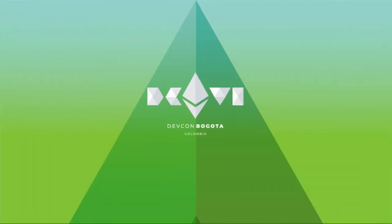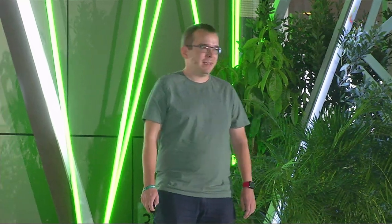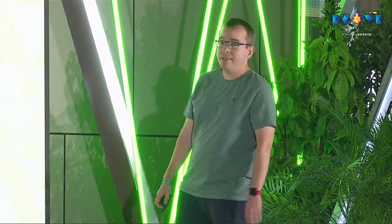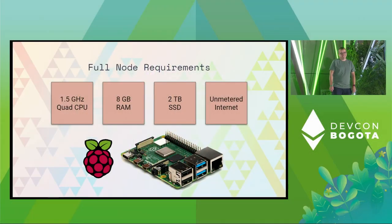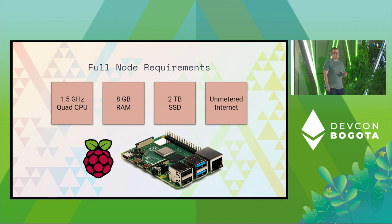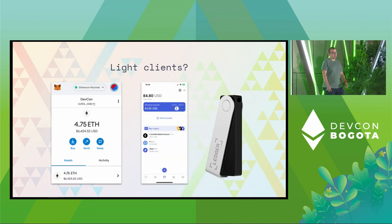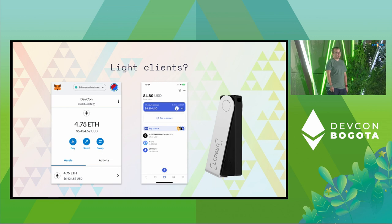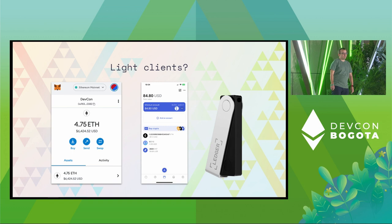To answer that, first let's look at what you actually need for a full node. At the very least it's a Raspberry Pi, eight gigabytes of RAM, two terabytes of storage, one terabyte a month internet. A light client is basically anything that doesn't support those specs — like a browser wallet such as MetaMask on the left, Status Mobile in the center, or a hardware wallet on the right.